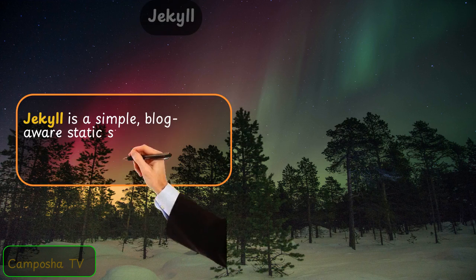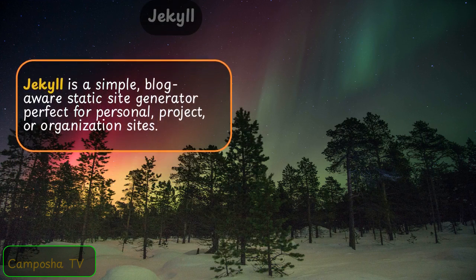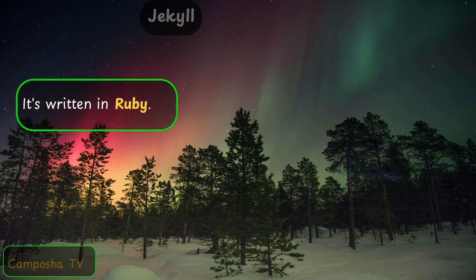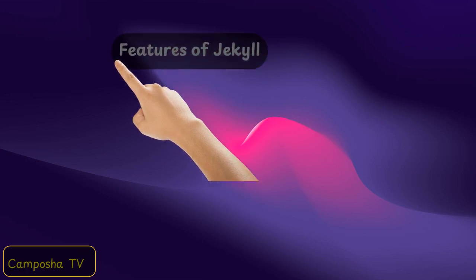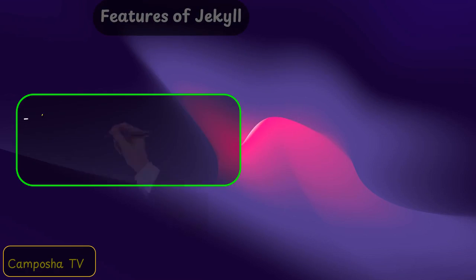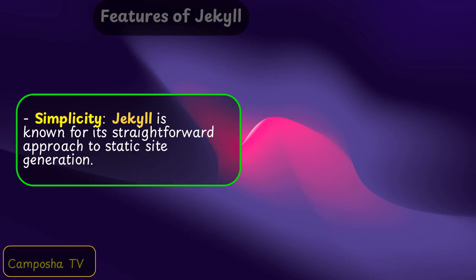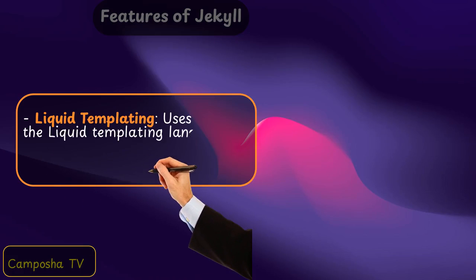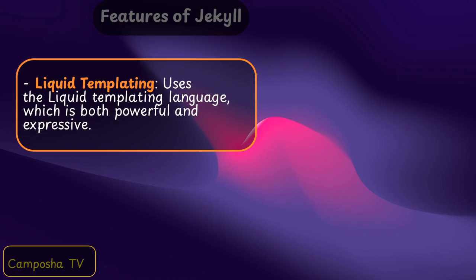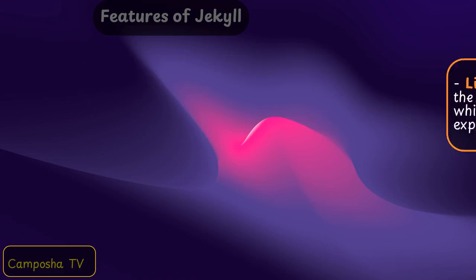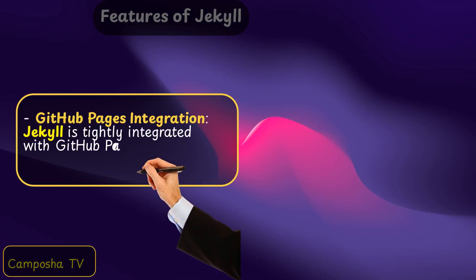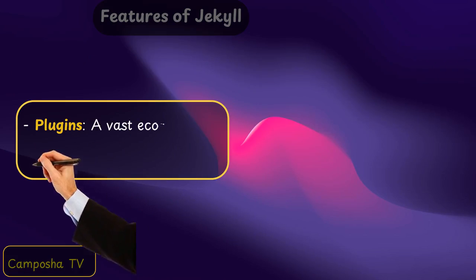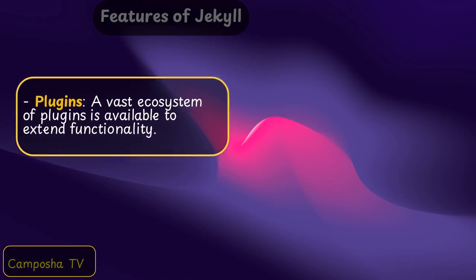Jekyll is a simple, blog-aware static site generator, perfect for personal, project, or organization sites. It's written in Ruby. Features of Jekyll: Simplicity — Jekyll is known for its straightforward approach to static site generation. Liquid templating — uses the Liquid templating language, which is both powerful and expressive. GitHub Pages integration — Jekyll is tightly integrated with GitHub Pages, making it easy to host. Plugins — a vast ecosystem of plugins is available to extend functionality.